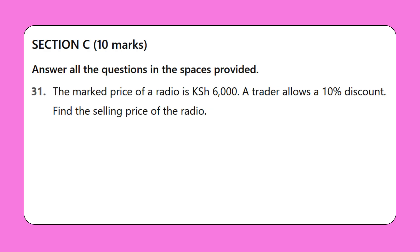Section C, 10 marks. Answer all the questions in the spaces provided. 31. The marked price of a radio is 6,000 Kenyan shillings. A trader allows a 10% discount. Find the selling price of the radio.